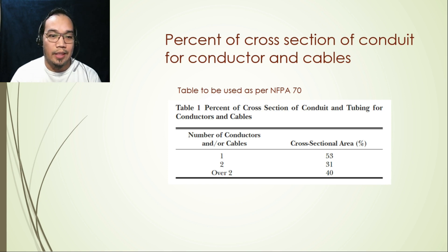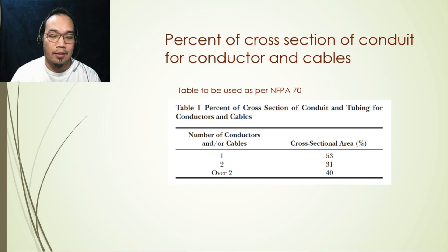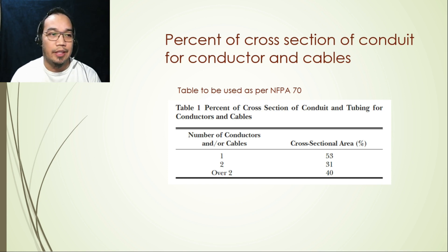If you have two cables, the cross-sectional area of the conduit that can be filled is only 31 percent. For more than two cables, the permitted cross-sectional area is reduced to 40 percent. We will explain this further with examples so you can understand.